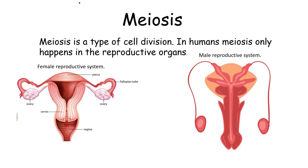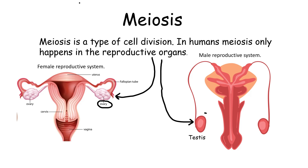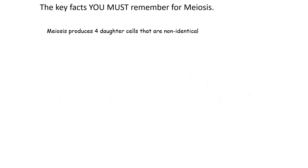Welcome to this presentation on meiosis. Meiosis is a type of cell division. In humans, meiosis only happens in the reproductive organs. In the female reproductive system, that's the ovary, and in the male, that's the testes. So you'll only find meiosis happening in those organs.